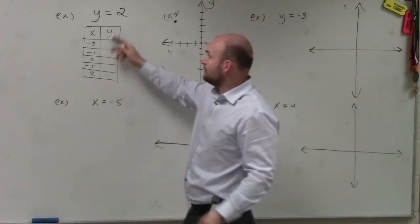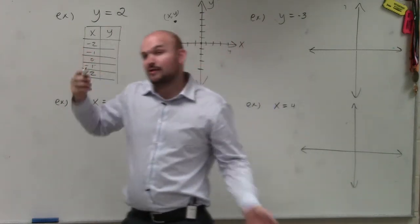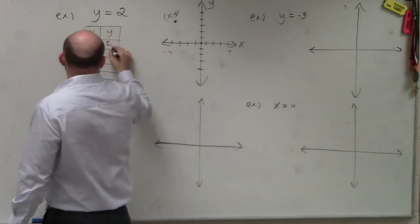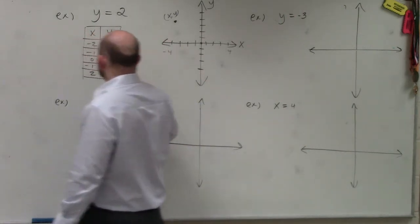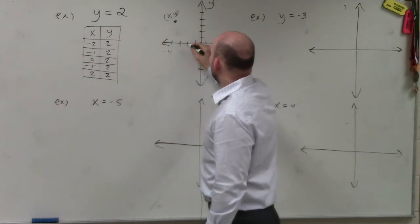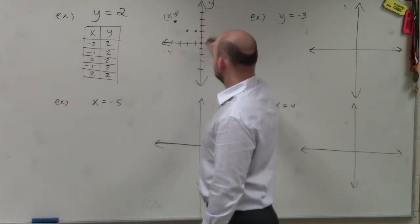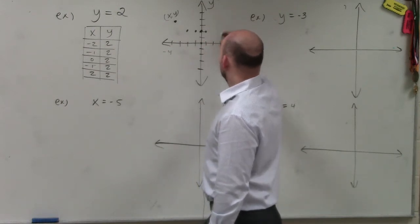Well, the problem is we don't have anything to plug our x into. The only thing we have is we have the equation y equals 2. Well, guess what? That's what 2 is going to equal for all of these. So when I go to negative 2, y equals 2. When I go to negative 1, y equals 2. 0, y equals 2. 1, y equals 2. 2, y equals 2.